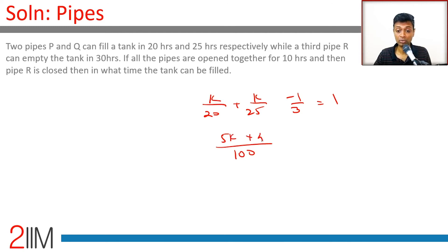9K/100 equals 4/3, so K equals 400/27. This is the total time taken by pipes P and Q.